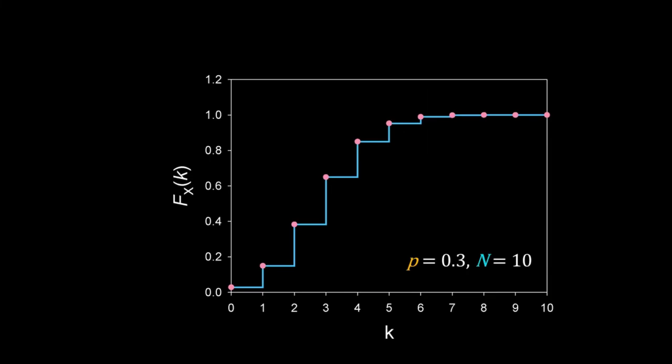Here is the CDF of the binomial distribution for n equal to 10 and p equal to 0.3. Since X is a discrete variable, the CDF is a step plot.